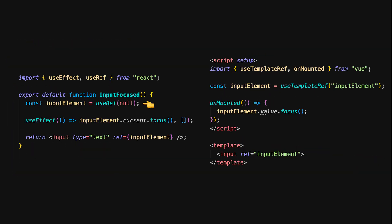In React, we can use the useRef hook to create a reference to a DOM element, and then use useEffect to manipulate it once the component is mounted. useRef creates a reference to the input element, and useEffect ensures that the input field is focused as soon as the component mounts. We access the DOM element through inputElement.current. In Vue, we use the ref function to create a reference to the DOM element, and the onMounted lifecycle hook to focus the input field once the component is mounted. Instead of inputElement.current, Vue uses inputElement.value to access the DOM element.